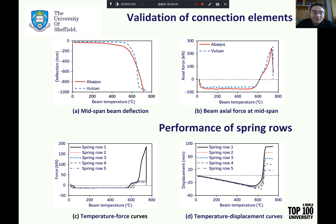As can be seen from the figures, at the start of heating, all the spring components undergo compressive displacement due to the thermal expansion of the connected beam. When the beam temperature reaches around 600 degrees, the compressive displacement of each spring component decreases gradually and eventually changes into tensile displacement as the connected beam enters its catenary action stage. Compared to other spring components, spring component 1, which is the top spring row, has experienced the largest tensile displacement and is the first one to fail due to bolt pull-out.